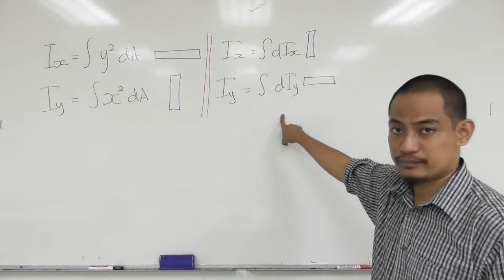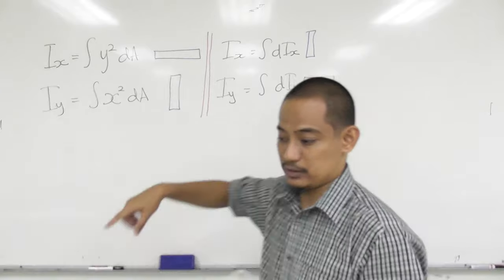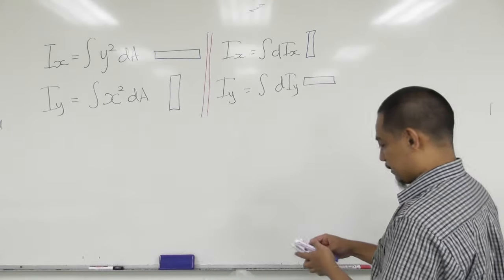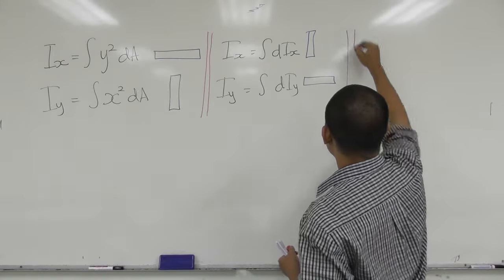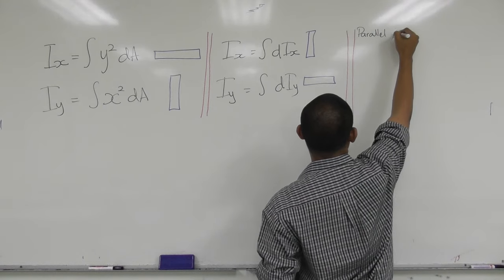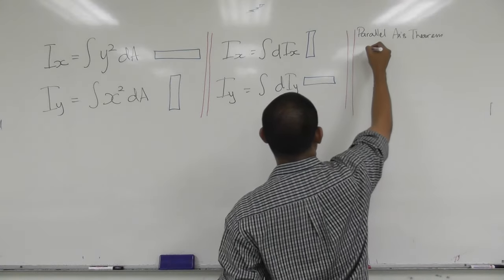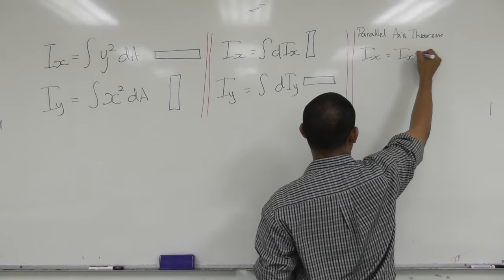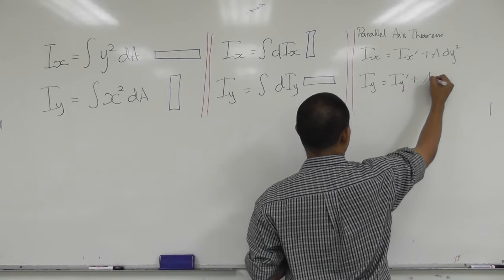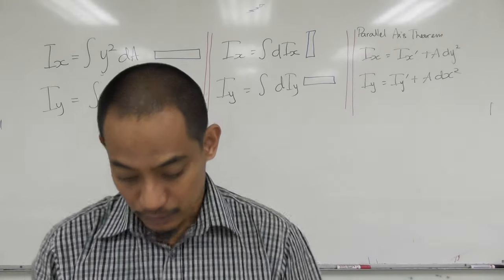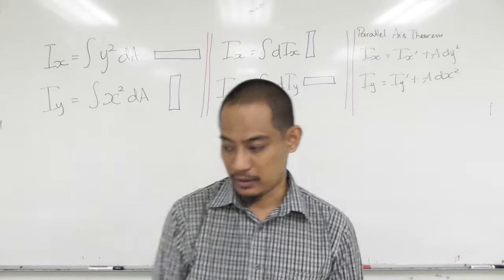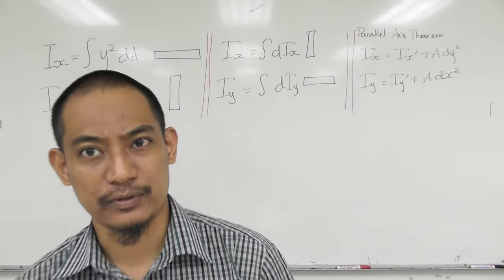To use the dIx equation, we actually need the parallel axis theorem from Chapter 10.2, so I'll cover it briefly here. The parallel axis theorem states: Ix = Ix' + A·dy², and Iy = Iy' + A·dx². This is straightforward — we do not need to find the centroid of the element; we just need dA. For Ix = ∫y² dA, you select the element, find dA, plug in, and integrate directly.